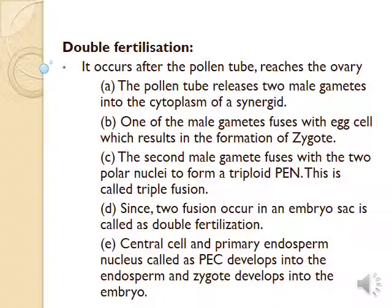Double fertilization: this event occurs after the pollen tube reaches the ovary. The pollen tube releases two male gametes. One male gamete fuses with the egg cell, resulting in the formation of a zygote, which develops into an embryo. The second male gamete fuses with two polar nuclei to form a triploid primary endosperm nucleus, which develops into the endosperm. This is termed triple fusion. Since two fusions occur in the embryo sac, this is called double fertilization.